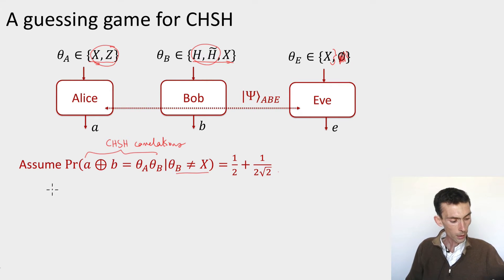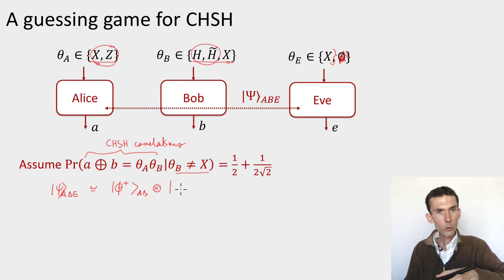I know that psi A, B, E must take a form where on Alice's system and Bob's system, it looks like an EPR pair A, B, tensored some auxiliary state that earlier we had called junk between A and B, but now there's also Eve.